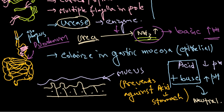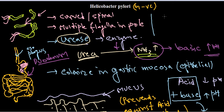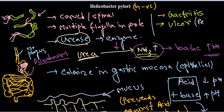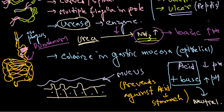Helicobacter pylori is related to different kinds of gastrointestinal diseases with symptoms like diarrhea and abdominal cramps. They are related with gastritis — different types of gastritis. They are also related with ulcer, which is damage to the epithelial lining, also called peptic ulcer. Chronic infection can cause peptic ulcer, while gastritis in different forms is also caused by H. pylori.